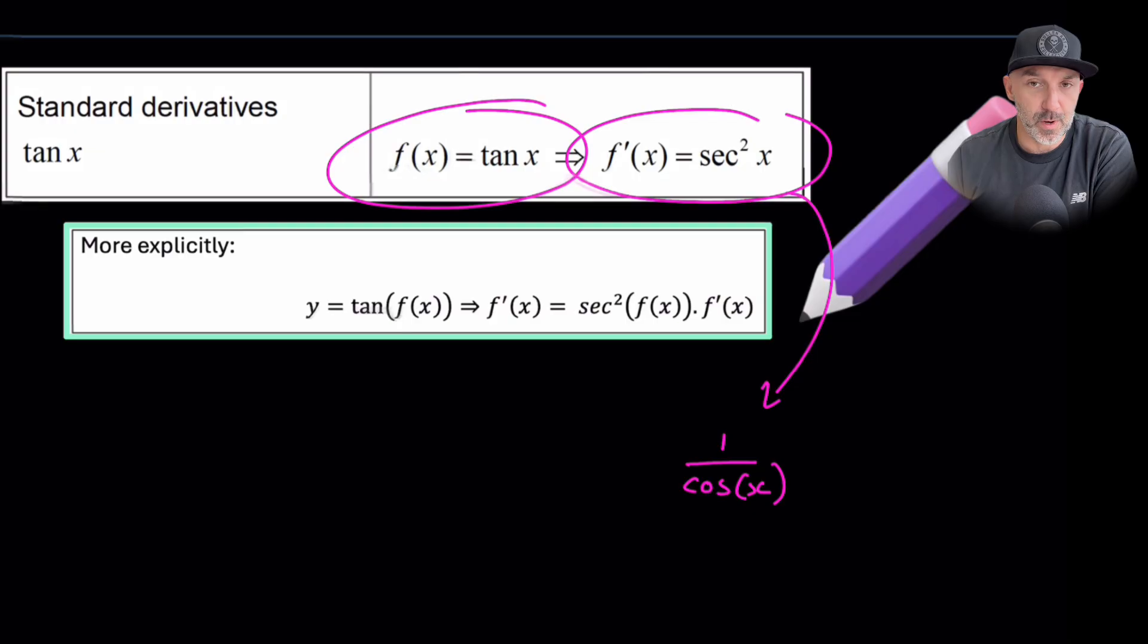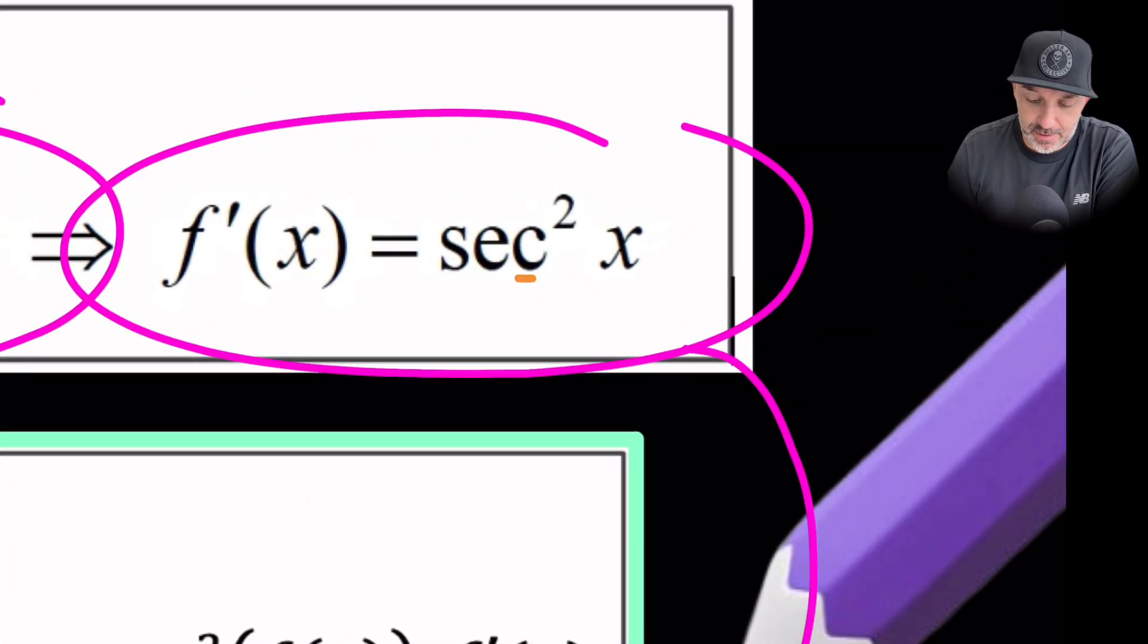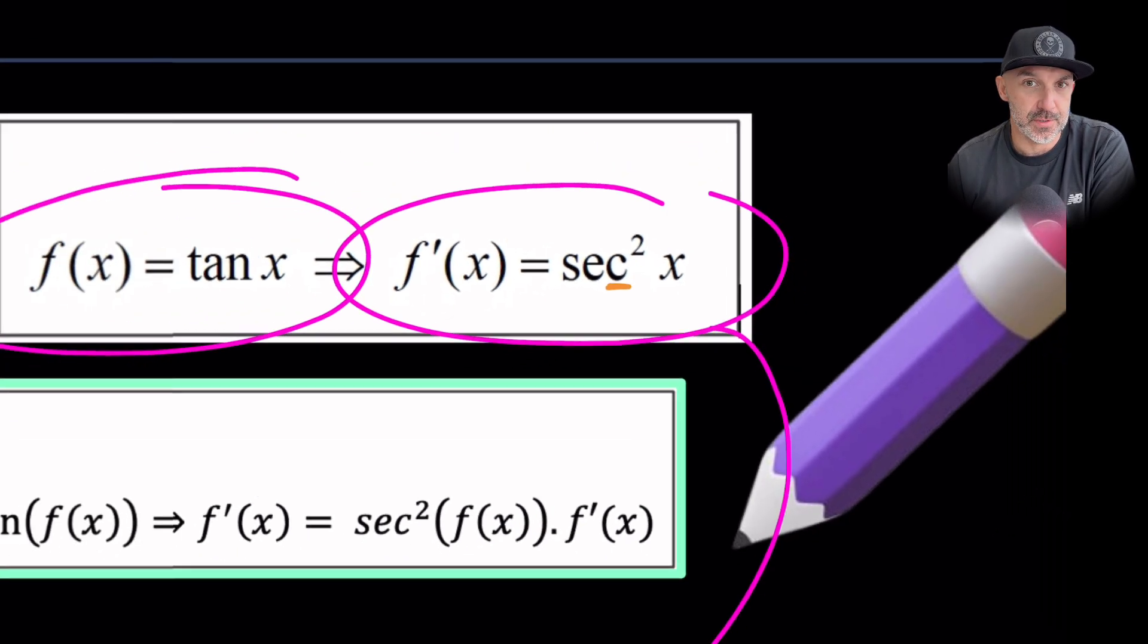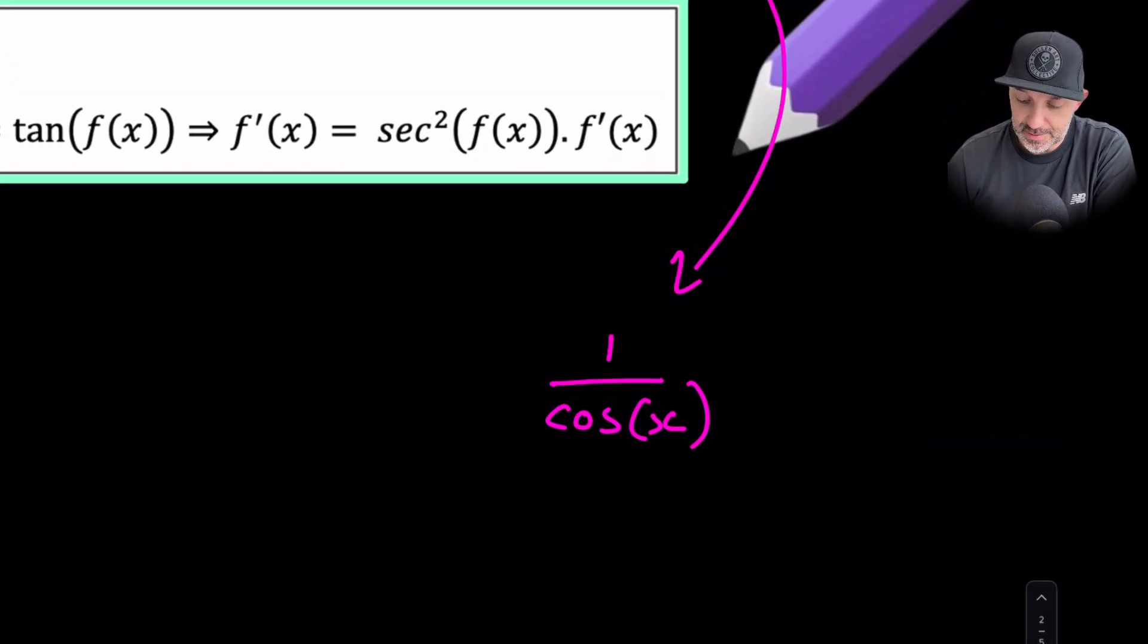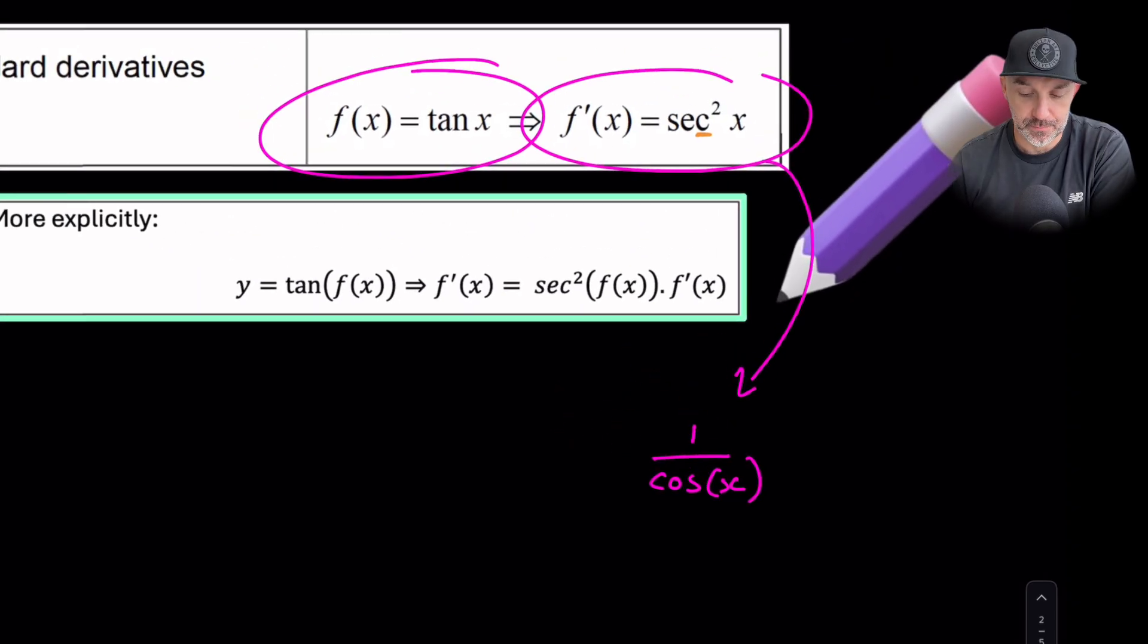Now a good way to remember that is the third letter in here is the thing that you're dividing by. There are other reciprocal trig functions that you can do in the same way, but secant is 1 over cos.